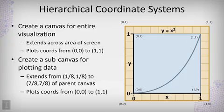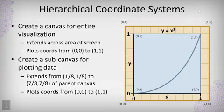Now we can plot inside this inner coordinate system using coordinates that are convenient for plotting the parabola, and then plot in the outer coordinate system using coordinates convenient for drawing the decorations — the axes and the title. We can define whatever coordinate system we want, wherever we want, to make drawing two-dimensional graphics more convenient.